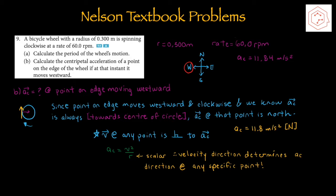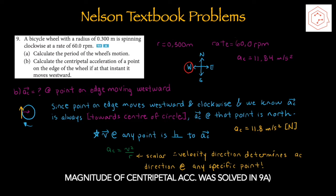Part B asks for the centripetal acceleration of a point on the edge of the wheel if at that instant it moves westward. Looking at a compass, westward is on the left. The wheel is spinning clockwise, and the centripetal acceleration is always toward the center of the circle. With the point moving westward, the centripetal acceleration at that point is directed northward. The velocity at any point is perpendicular to the centripetal acceleration, so the yellow and purple arrows make 90 degrees. Therefore, the centripetal acceleration is 11.8 m/s² north.